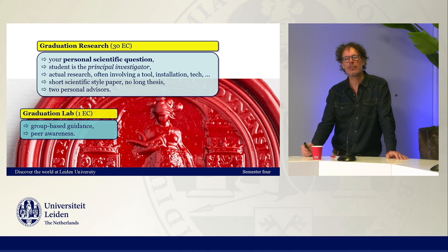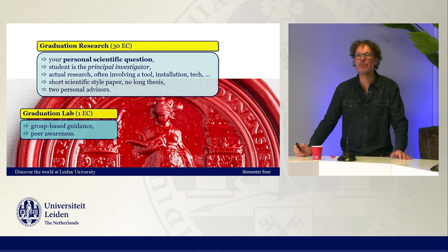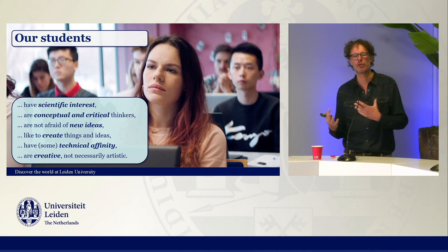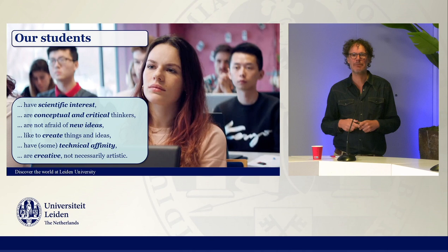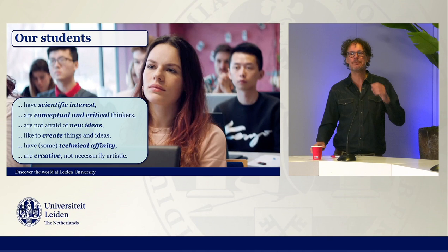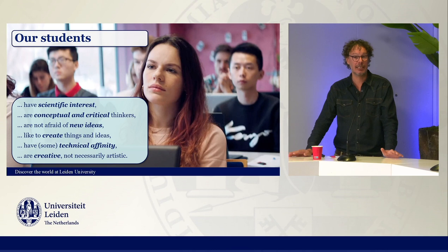What kind of students do we have in our program? If we would summarize it shortly: they all have an academic research interest — that's incredibly important. They must have an interest in academic research. They are generally conceptual thinkers, they're critical, they have some technical affinity, and they need to be able to program. This is the profile of the students that we have and the students that we admit into our program.